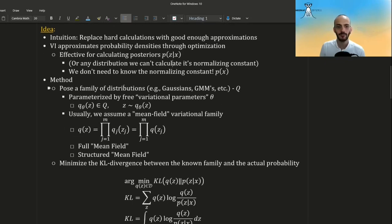The method is to pose a family of distributions, for example, a family of Gaussians, a family of Gaussian mixture models, etc. We can denote it by capital Q.